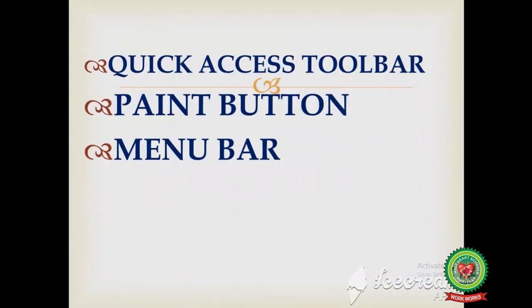So students, in today's class we have learnt about the components of the Paint window: number one, quick access toolbar; number two, paint button; number three, menu bar. Now you can do practice at home — open the Paint program on your computer and identify these components. In the next class, I will discuss the next components of the Paint window. Thank you.